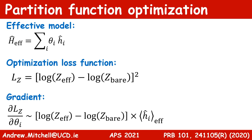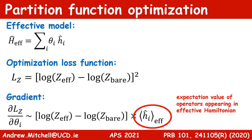We therefore define an effective model H_eff as the sum of operators h_i multiplied by their coupling constants θ_i, and then construct an optimization loss function L(Z) which is simply the difference in the partition functions squared. For efficient optimization with a large number of tuning parameters θ_i, we need the gradient of the loss function analytically. The nice thing is that the gradient takes a form involving the expectation value of the operators h_i appearing in the effective Hamiltonian — since these can be computed or estimated, we can know the gradient analytically and efficiently optimize our effective model.